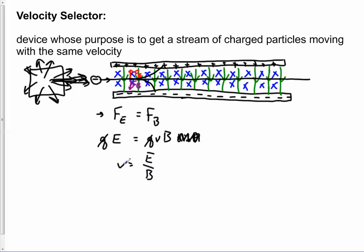So if the negatively charged object has a speed that is exactly E divided by B, that will mean that the two forces are equal, and that means that it won't get pushed up or down. It'll go straight through because there'll be a net force of zero.